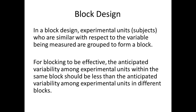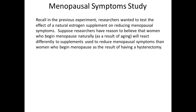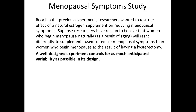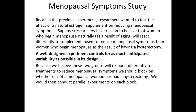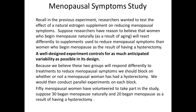Different blocks should be different with respect to the response variable. In the menopausal symptoms study, researchers believe that women who begin menopause naturally due to aging will react differently to supplements than women who began menopause as a result of a hysterectomy. A well-designed experiment controls for as much anticipated variability as possible. Because we believe these two groups will respond differently to treatments, we should block on whether or not a menopausal woman has had a hysterectomy, then conduct parallel experiments on each block. Suppose 30 of the 50 volunteers began menopause naturally and 20 began as a result of a hysterectomy.